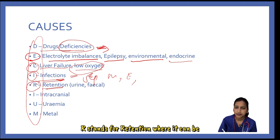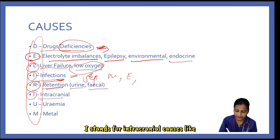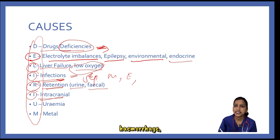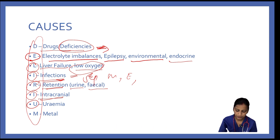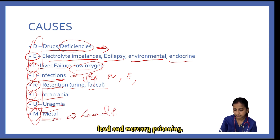R stands for retention, which can be urinary or fecal. The second I stands for intracranial causes like hemorrhage, CVA, TIA, tumors and trauma. U stands for uremia. M stands for metals, wherein we can think of lead and mercury poisoning.